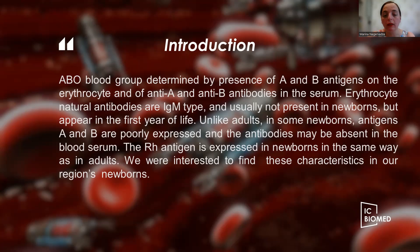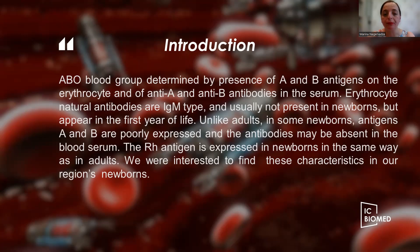Usually these antibodies appear in the first year of postnatal life. Unlike adults, in some newborns, antigen A and anti-B are not well expressed. They are fully expressed in adults, and in some cases antibodies may be absent in the blood serum. The antigens are not well expressed because they are not directly a product of the genes — first, transferase is synthesized, which modifies the primary erythrocyte receptors. This is a multi-step process, and at the newborn age they show a weak agglutination reaction.